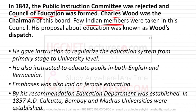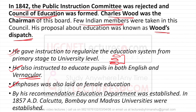They recommended several proposals for education, known as Wood's Dispatch. First, he gave instructions to regularise the education system from primary to university level. He also instructed education in both English and vernacular languages — meaning the local mother tongue. Wood emphasised female education, believing it would be very beneficial. A separate education department in the government was established, and in 1857, Calcutta, Bombay and Madras Universities were established for the first time.